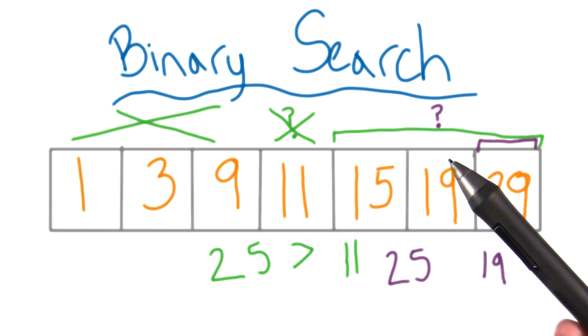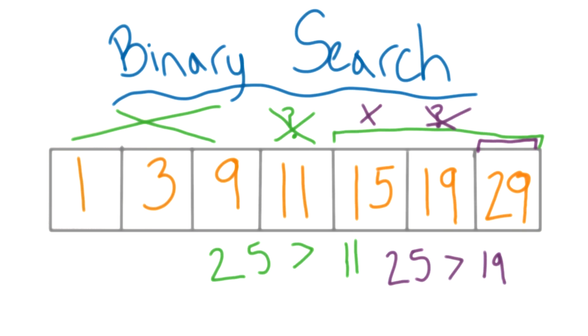Check the middle element and then move forward from there. My number is still bigger than the middle of this array, so now I only have to check the last element.